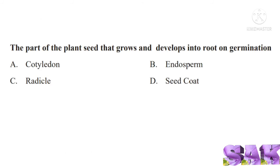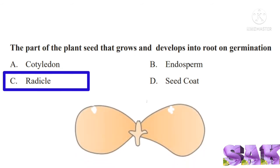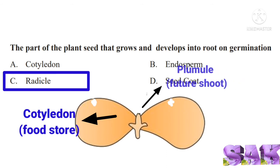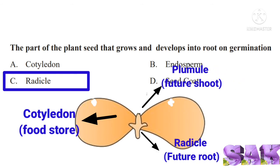Next question: the part of the plant seed that grows and develops into root on germination. Correct answer for this question is option C, radicle. Related to this question, let us study the diagram of germination of seed. Cotyledons contain stored food, plumule develops into future shoot, radicle develops into future root.